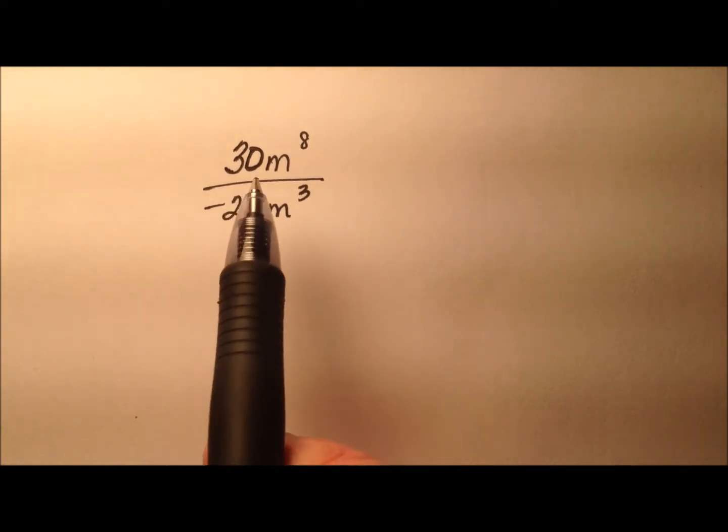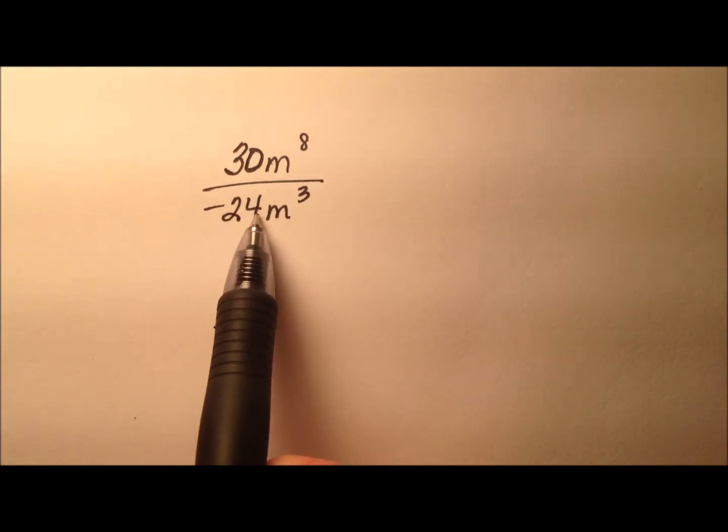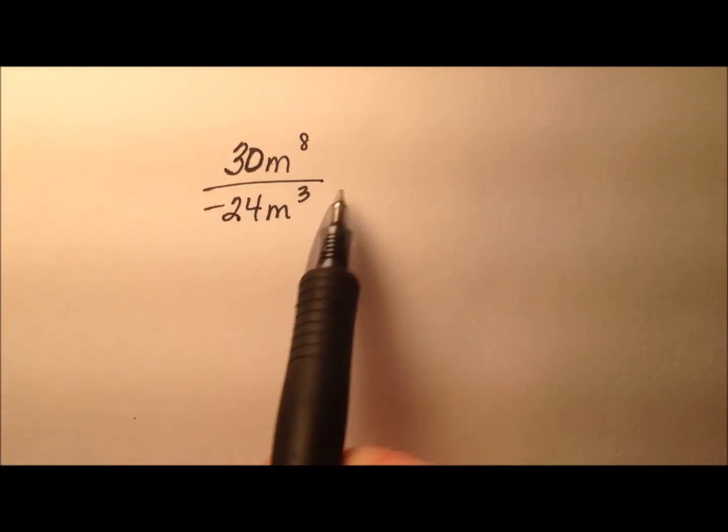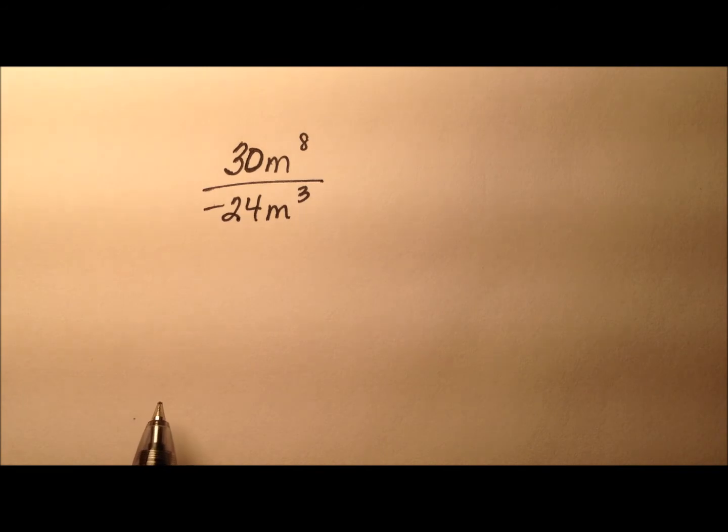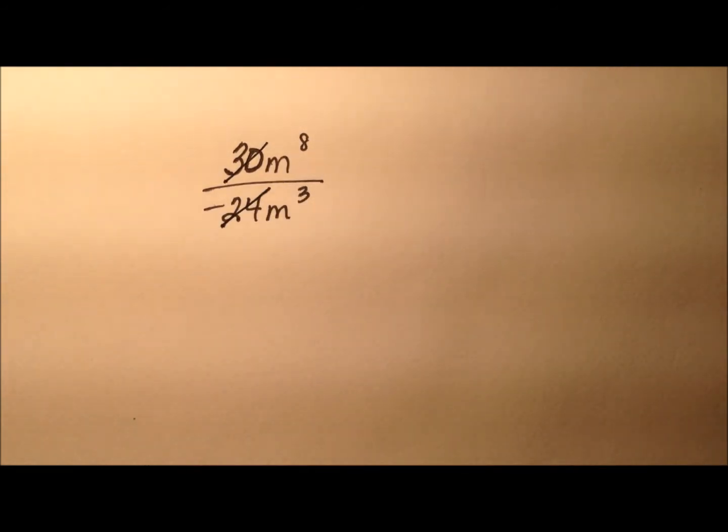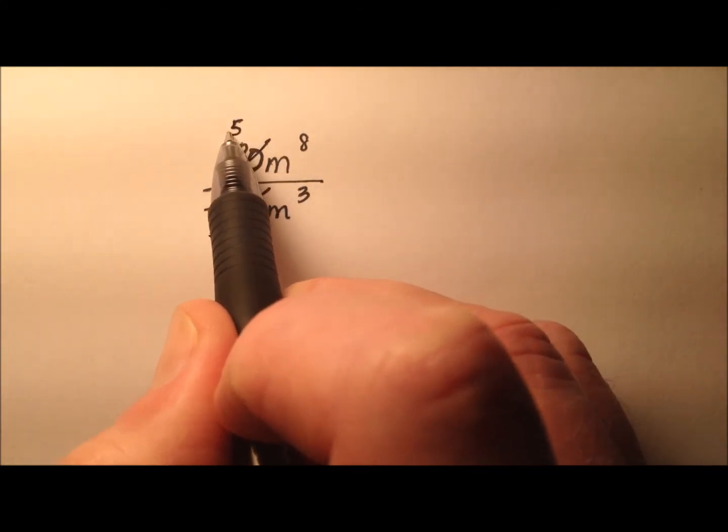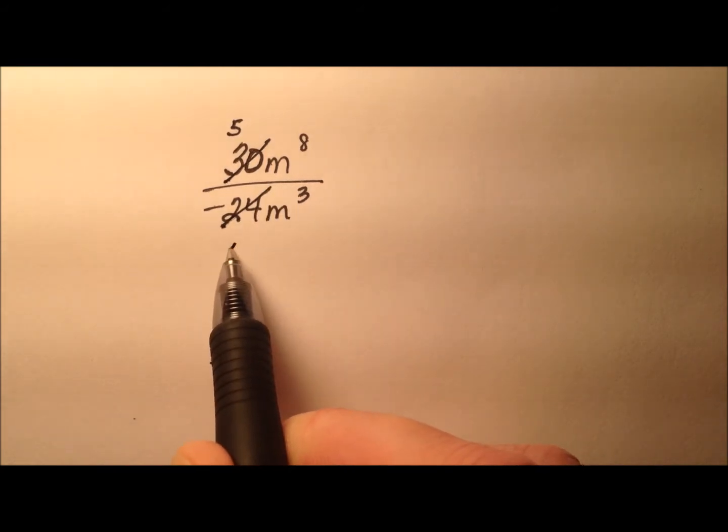Our first example is 30m to the eighth and we're going to divide that by negative 24m cubed. Right now it just looks like a fraction. Let's take our 30 and our 24 and we can reduce that fraction by dividing 6 out of both of them. So 30 divided by 6 will be 5 and 24 divided by 6 will be 4.